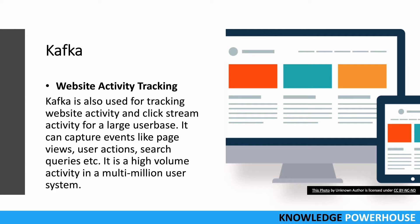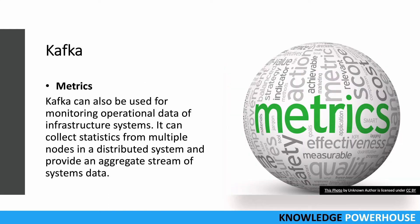The second use case is website activity tracking. Whenever millions of users come to your site, they access pages and click on things — this generates a lot of events called a clickstream. To track all this website activity, Kafka can help because it can capture events very fast: page views, user actions, search queries, and more. All of this can be passed to one central stream, from where messages can be consumed by different downstream consumers. For a high-volume user base, Kafka is very effective for website activity tracking.